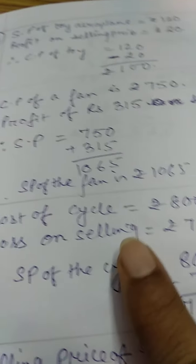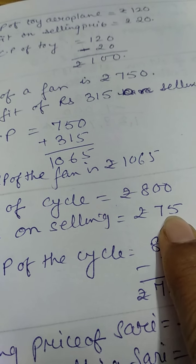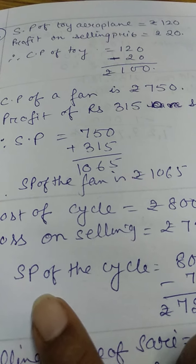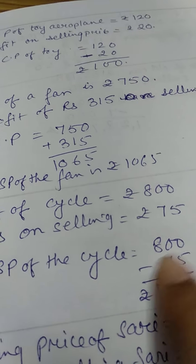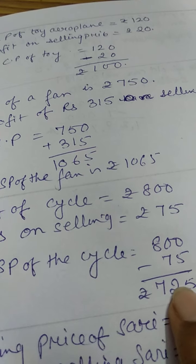So, now the cost of the cycle is Rs. 800. Loss on selling Rs. 75. So, SP of the bicycle is Rs. 800 minus Rs. 75. Then it will be Rs. 725.